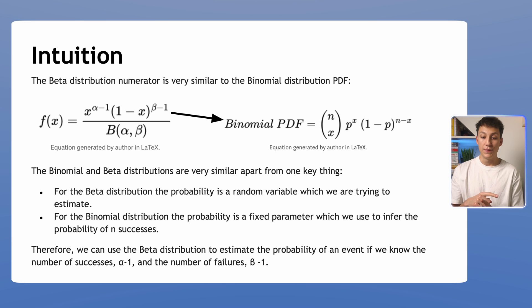For the beta distribution, the probability is the random variable we're trying to estimate. But for the binomial distribution, the probability is fixed and what we're trying to do is infer the probability of a given number of successes knowing the probability that they occur at. So there's a slight distinction there but it's good to be clear on that. Beta is trying to say what is the probability of a success given we've had this many successes and failures.